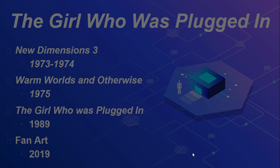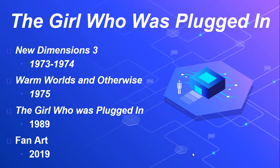The piece that we were given to read by Tiptree was The Girl Who Was Plugged In. Its first publication is in the New Dimensions anthology, appearing in 1973 and 1974. It then appears in Warm Worlds and Otherwise, a collection of short stories that Tiptree puts together herself in 1975, and then it appears on its own as The Girl Who Was Plugged In in 1989.